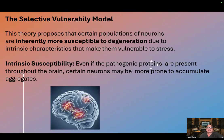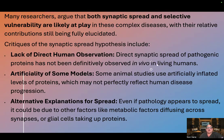The selective vulnerability model proposes that certain populations of neurons are inherently more susceptible to degeneration due to intrinsic characteristics that make them vulnerable to stress. Even if the pathogenic proteins are present throughout the brain, certain neurons may be more prone to accumulate aggregates. Many researchers argue that both synaptic spread and selective vulnerability are likely at play in these complex diseases, with their relative contributions still being fully elucidated.